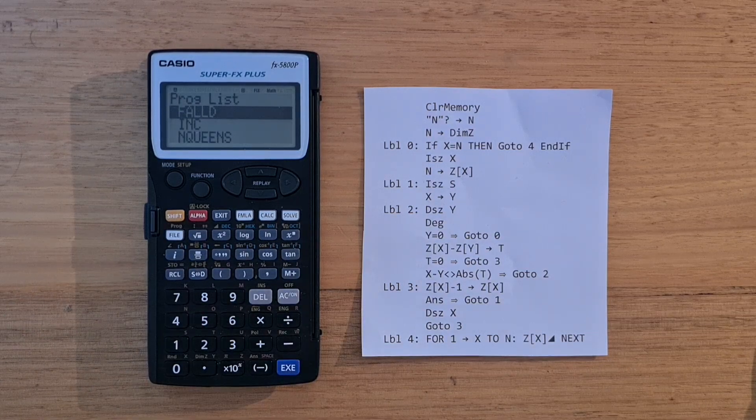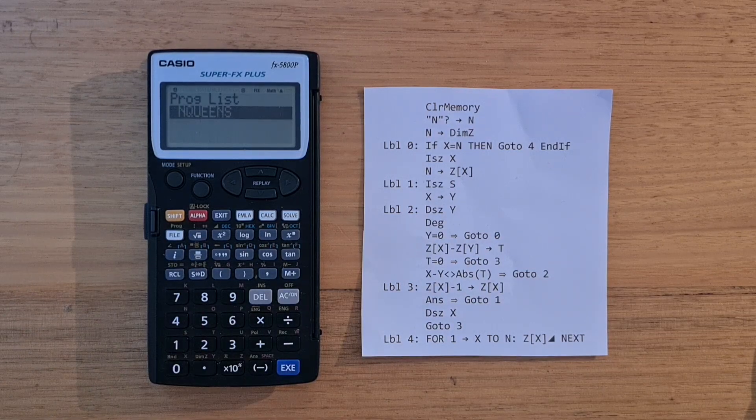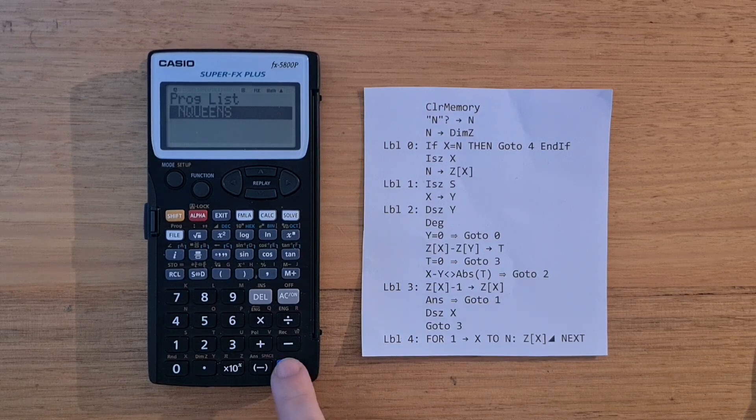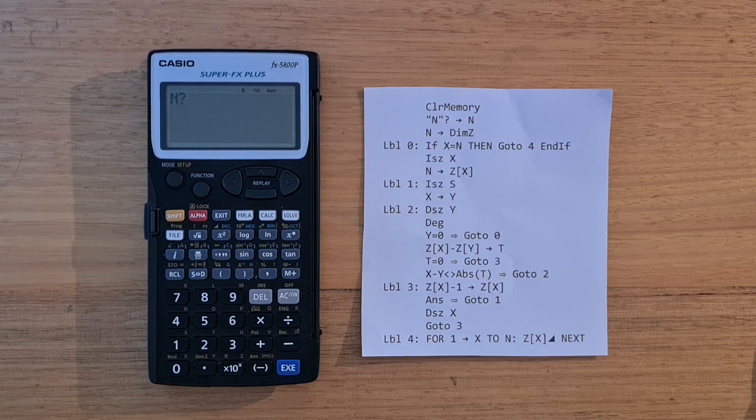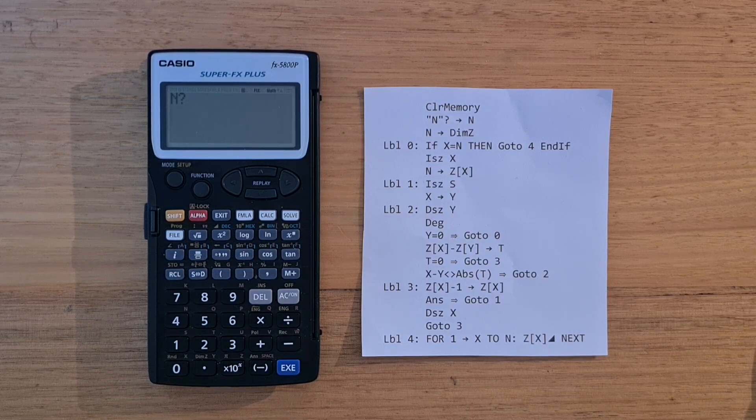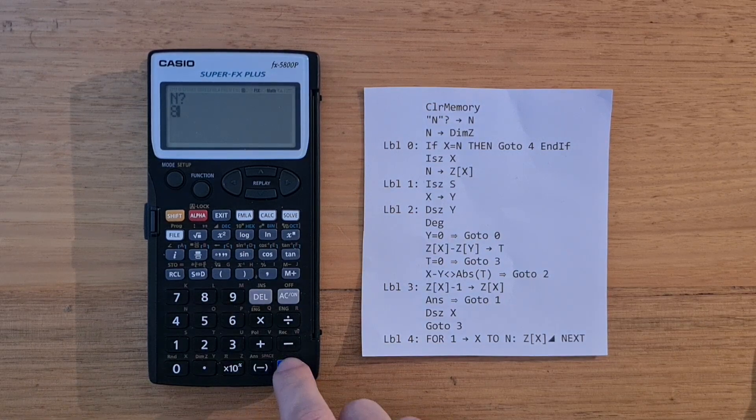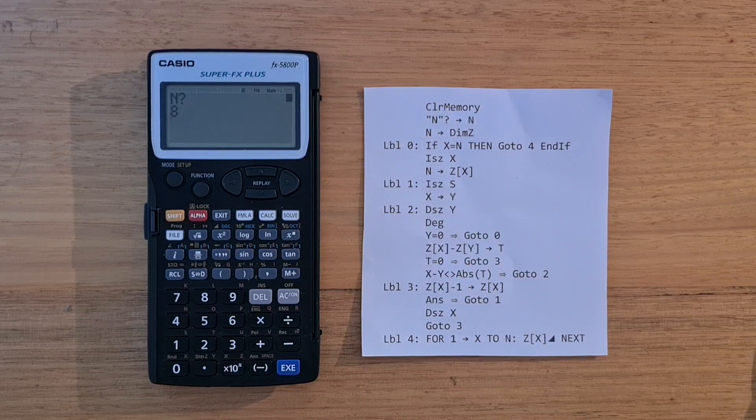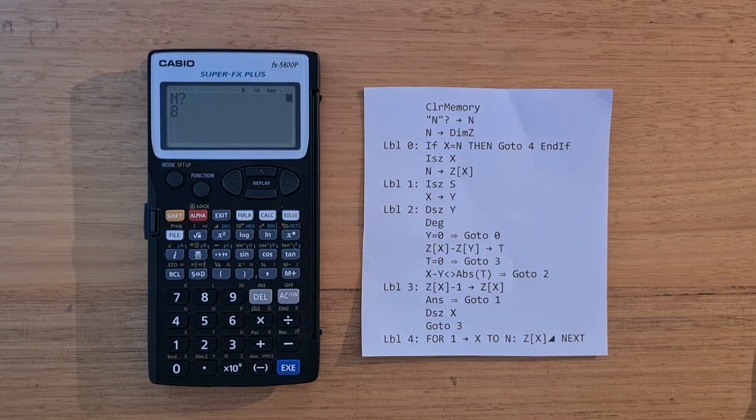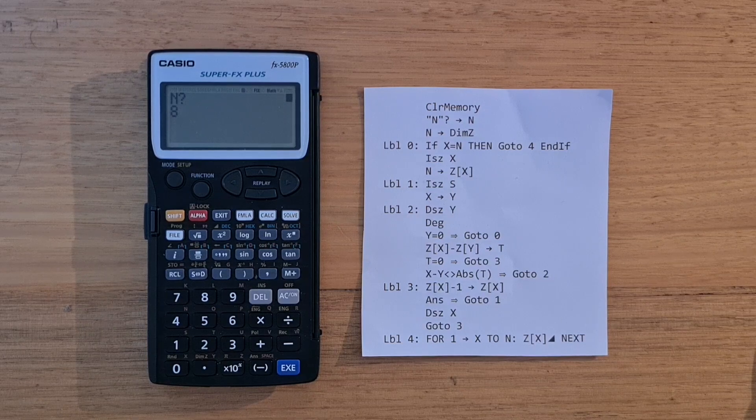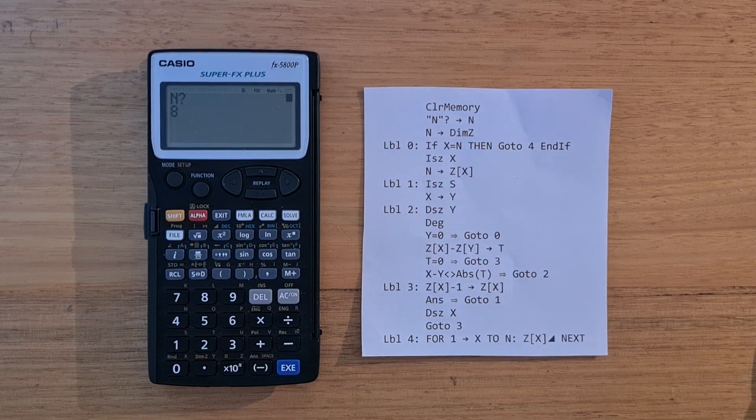So each program has a string label and can be run very easily from calc mode by just hitting the file key, followed by the first letter of the name. And so here we'll pick our N Queens program. And we'll solve for N equals 8. And this is going to take around three and a half minutes, which is about a minute slower than the HP 35S. So I'll skip ahead now.